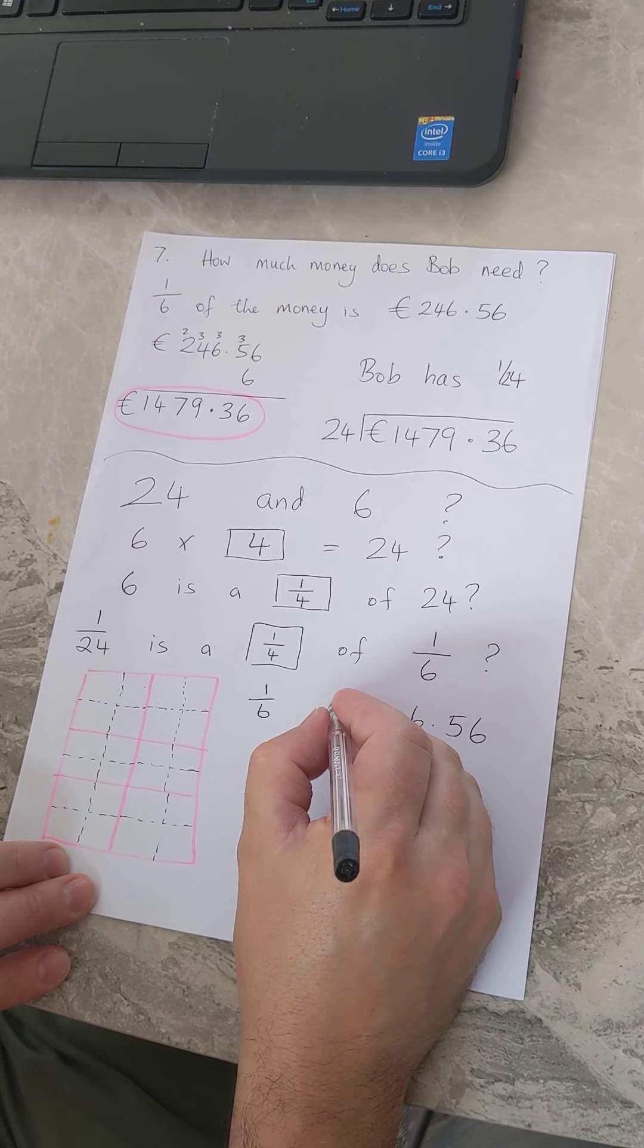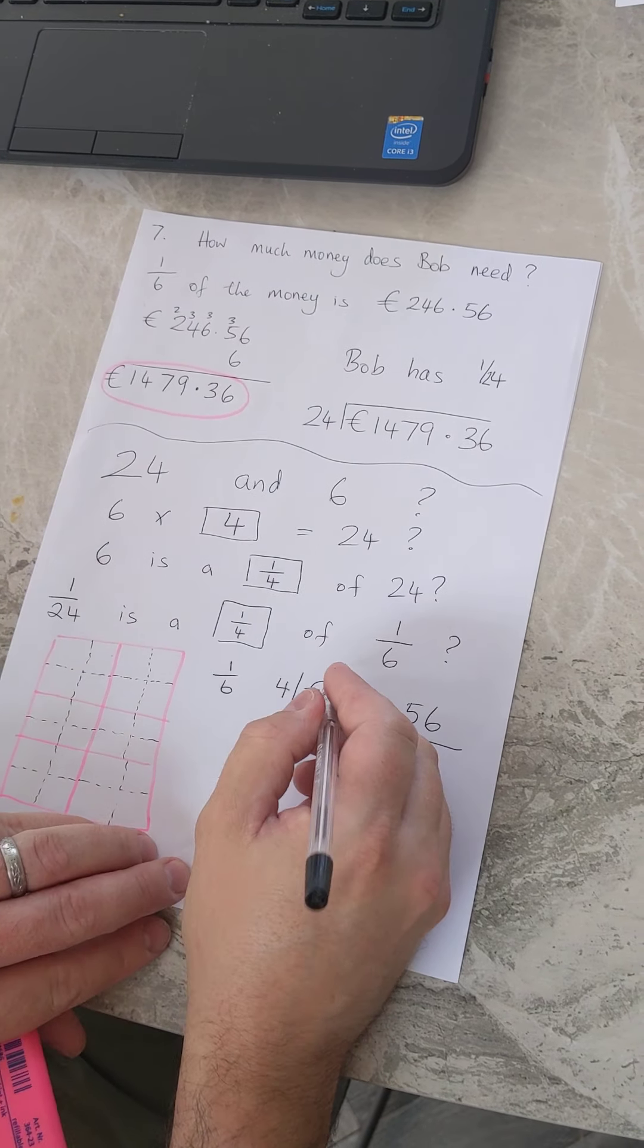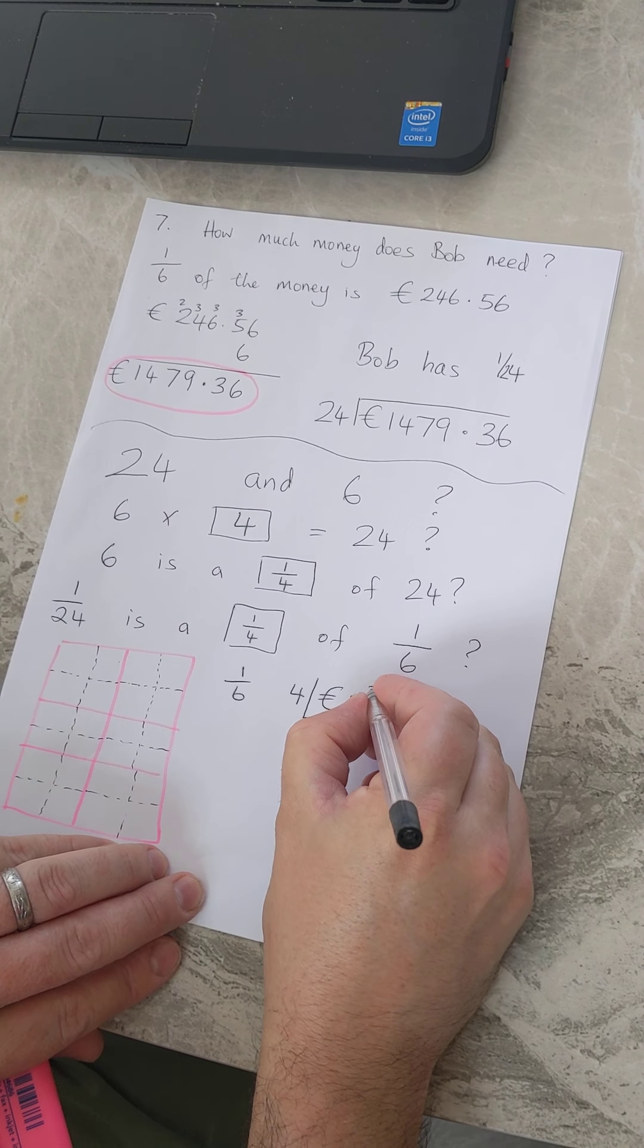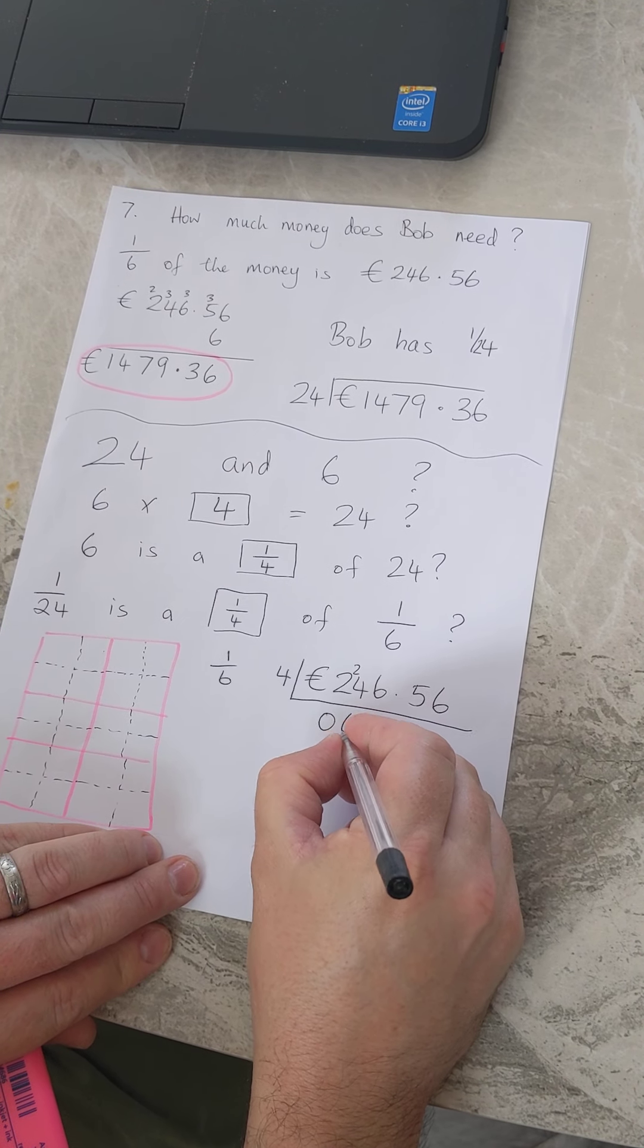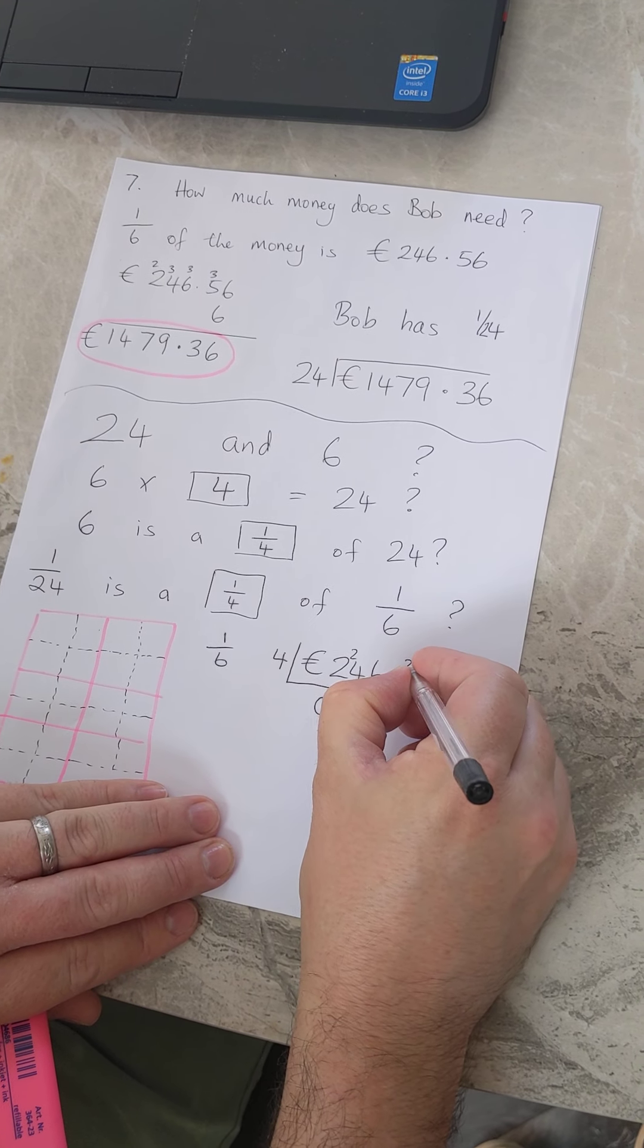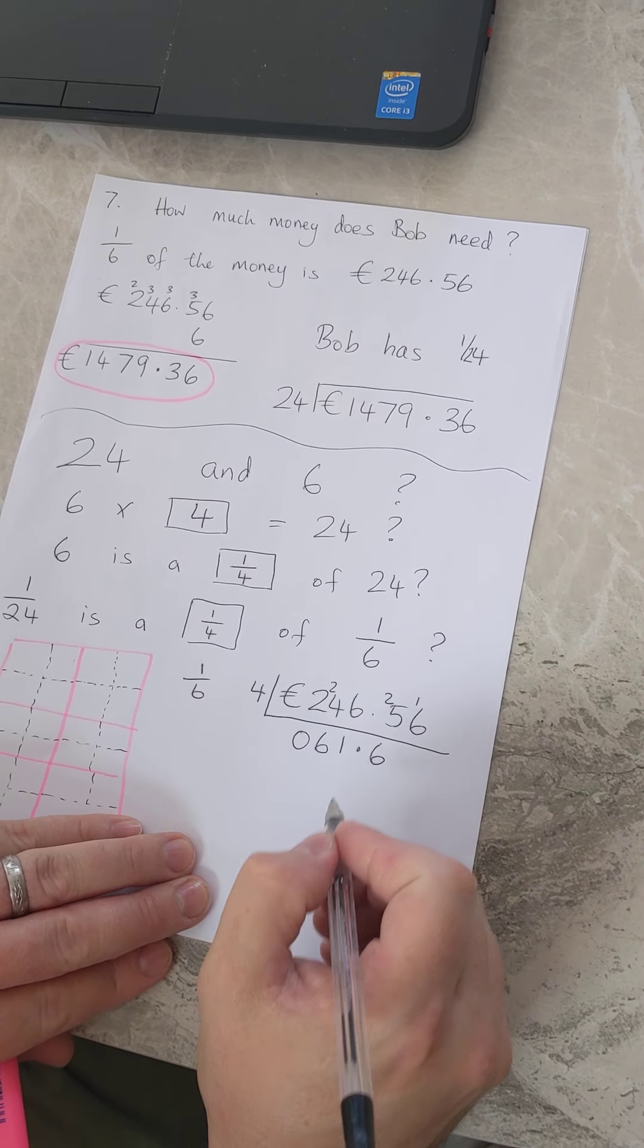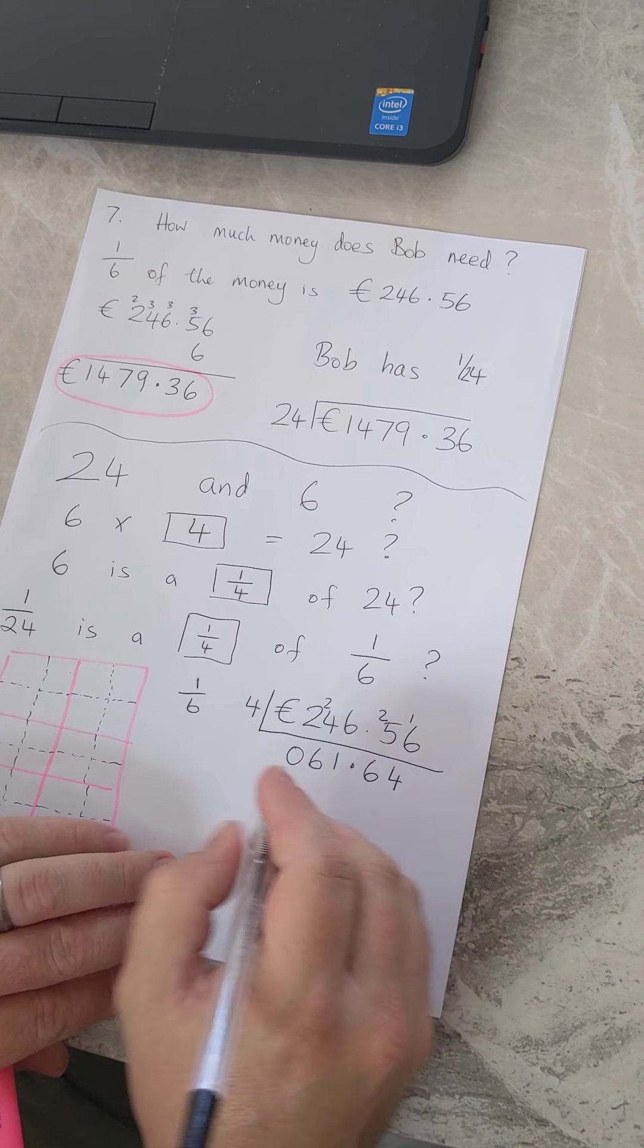So if I divide that into quarters, divided by four: four into two doesn't go, four into twenty-four goes six times, four into six goes once with a remainder of two, four into twenty-five goes six times with a remainder of one, and four into sixteen goes four times.